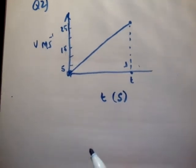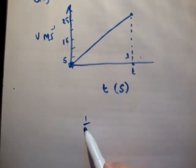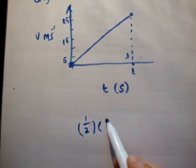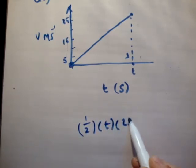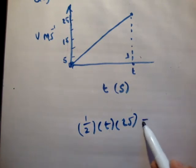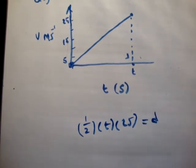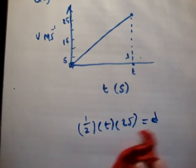Now the next thing is, we know that the area underneath this curve is equal to the distance. So that would be of course half the base by the perpendicular height. So it would be half times T multiplied by 25. Okay, so and that's equal to the distance. But we don't know what the time is so we'd best go find that out.